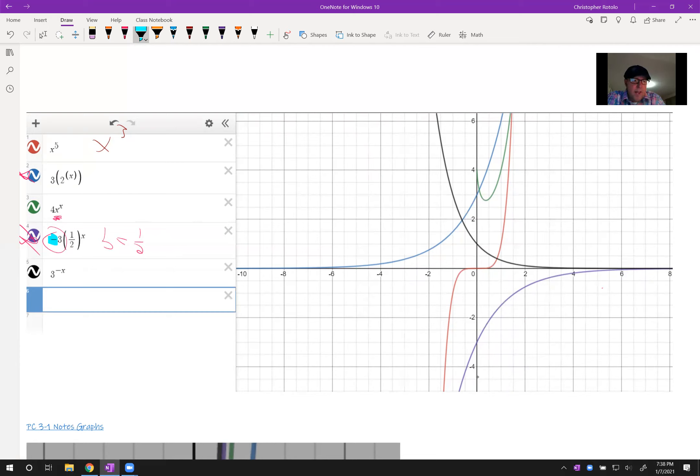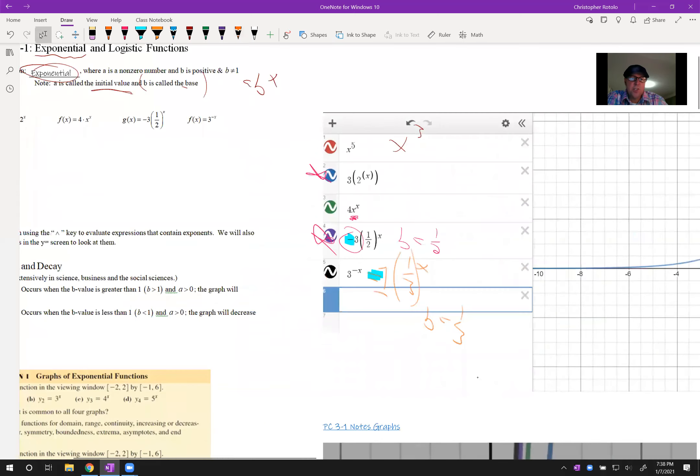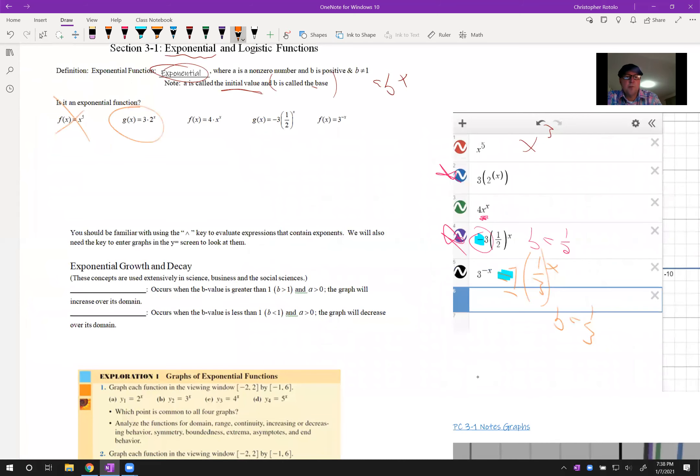And then the one we have here listed in black, this is 3^(-x). Let's translate that first. This is (1/3)^x. So we could say the a value is one. That means it's going to go through one. We have b is one third, which gives us the fact that it's going from left to right headed down. We said yes to this one, yes to this one, and yes to this one. But we can identify a is three and b is two. A is negative three, b is one half. A was one because there's nothing there. And b happens to be one third after we do a little translation with that negative x power.